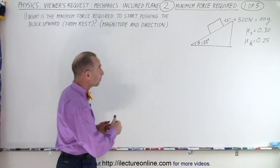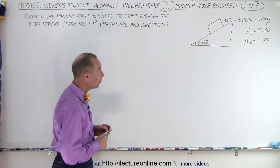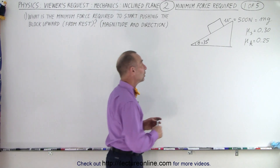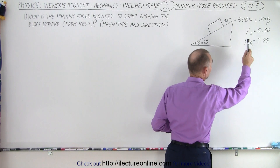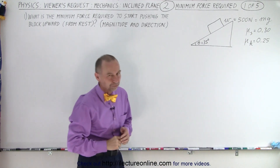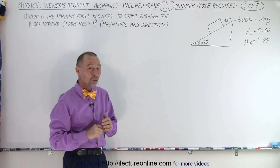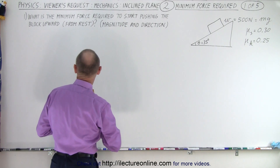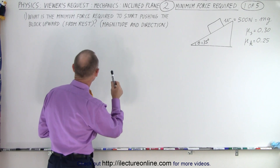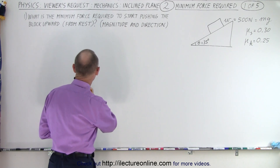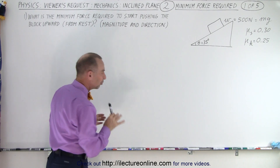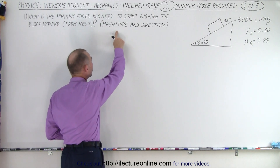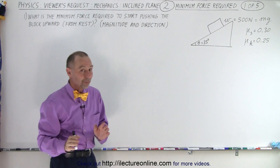The problem starts with an inclined plane with an angle of 35 degrees, a block with a weight of 500 newtons on the inclined plane, with a static coefficient of friction of 0.3 and a kinetic coefficient of friction of 0.25. The first part asks: what is the minimum force required to start pushing the block upward from rest? They wanted to know both the magnitude and direction of the force, which makes it really interesting.